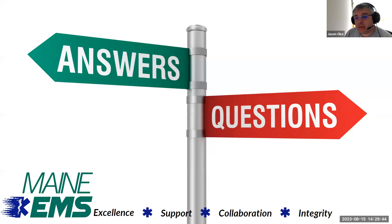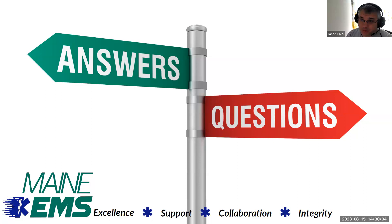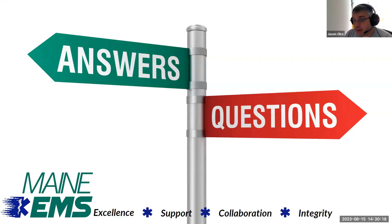What I'd suggest agencies do: once you receive your cutover date, give your billing company a heads up. For agencies using Zoll or ESO for billing software, there's a toggle switch in the run form to select that. We have done a test run with Zoll's billing company and it flowed through their auto export flawlessly. I would reach out to your billing company and ask if they're ready to handle NEMSIS 3.5 data. If they're not, that's something you'll have to discuss with them.